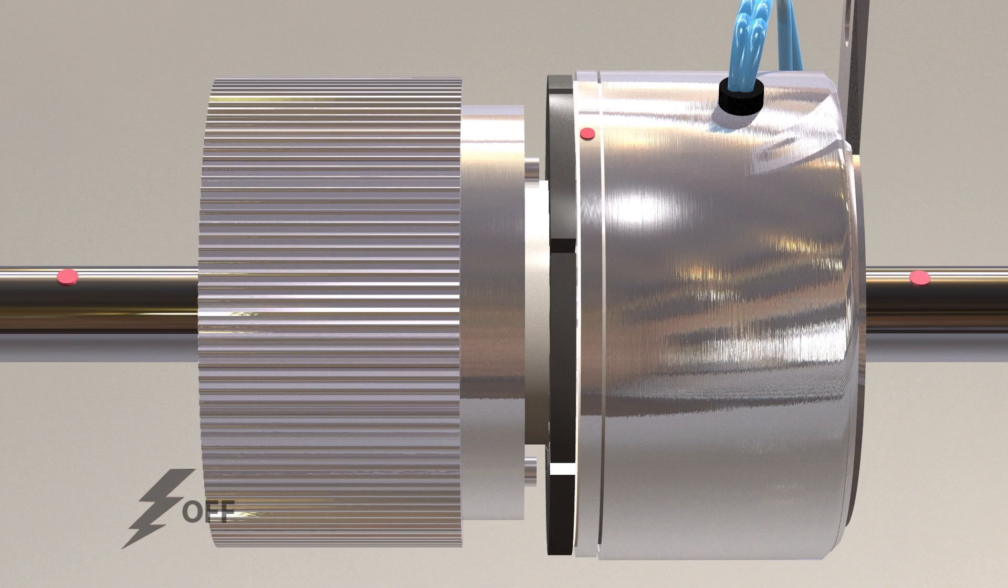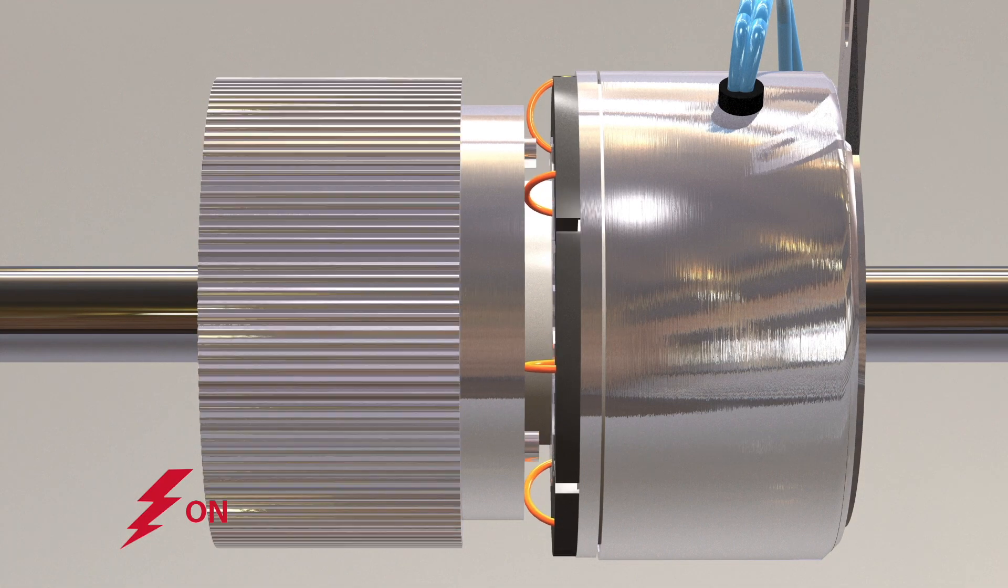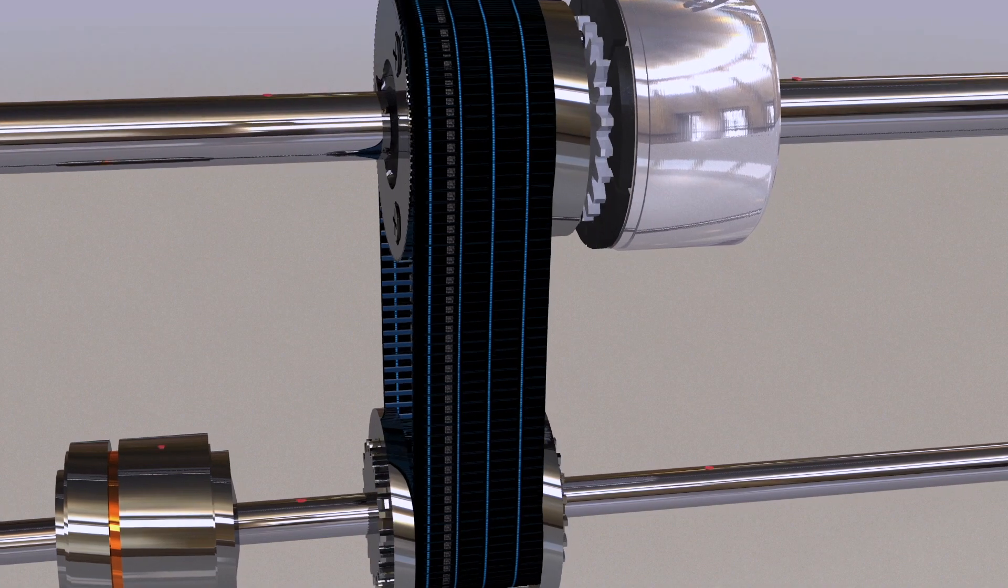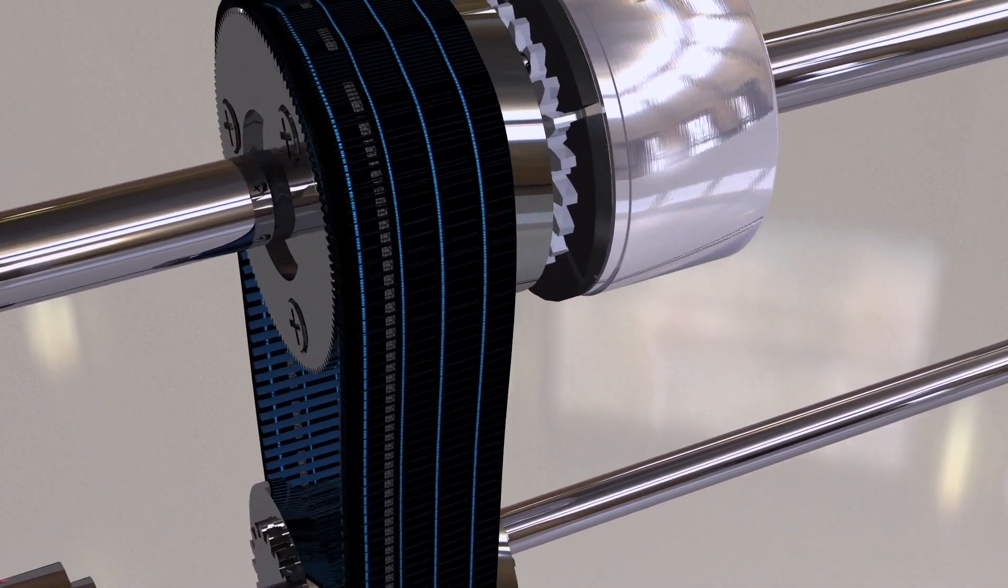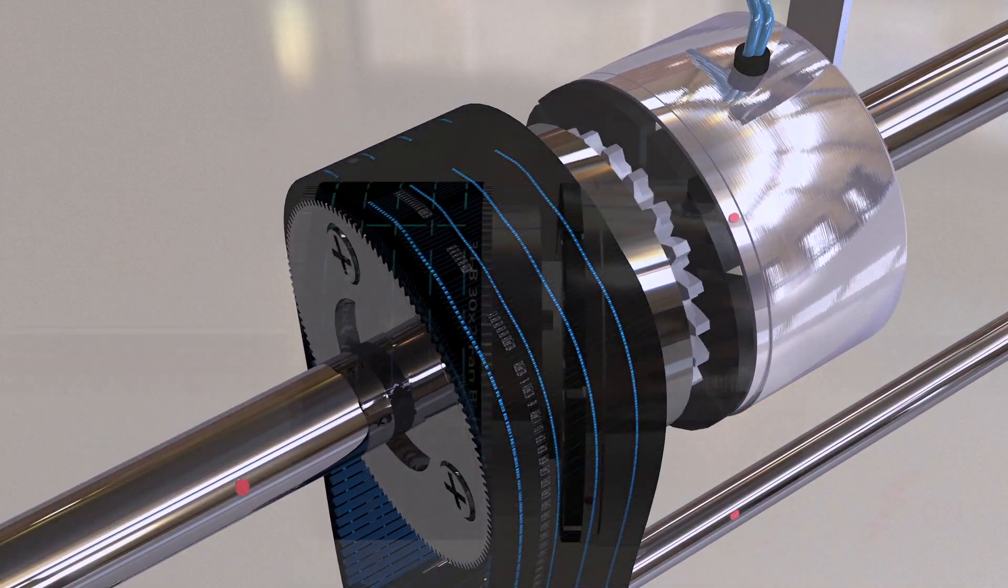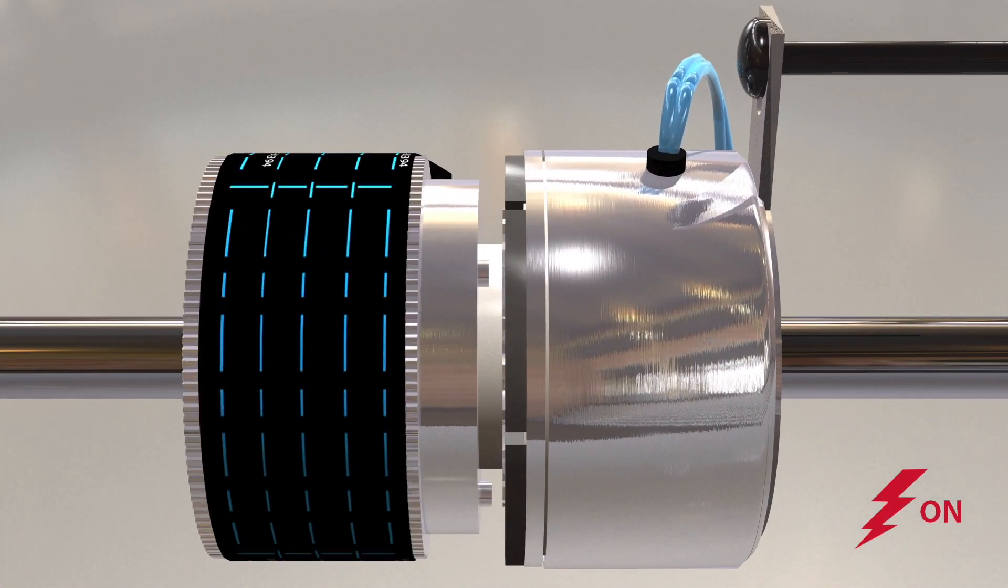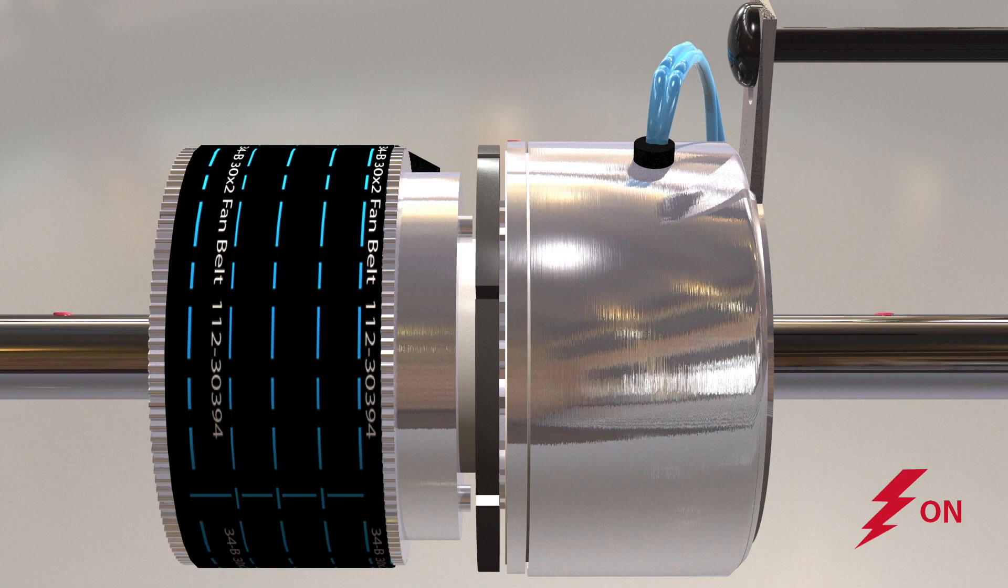When the clutch is fully engaged, torque transfer is 100% efficient as there is no relative slip. When current or voltage is removed from the clutch, springs hold the armature away from the rotor surface, creating a small air gap.